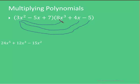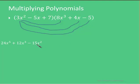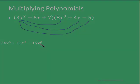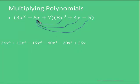3x squared times this entire polynomial. So we go 3x squared times 8x cubed gives us 24x to the fifth — 3 times 8 is 24, and 2 plus 3 is 5. Then 3x squared times 4x gives us 12x cubed. And then 3x squared times minus 5 gives us minus 15x squared. And now minus 5x times this entire polynomial.